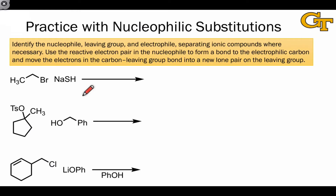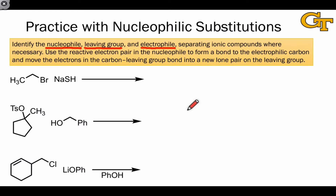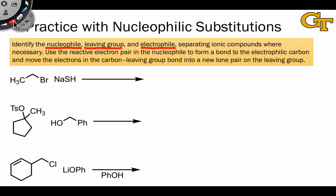To draw the product of a nucleophilic substitution reaction, first identify the nucleophile, leaving group, and electrophile. This is good practice for any substitution or elimination process, and more generally any organic reaction. You're going to want to identify the nucleophilic molecule and the electrophilic molecule. This often involves separating ionic compounds, particularly where the nucleophile is involved.